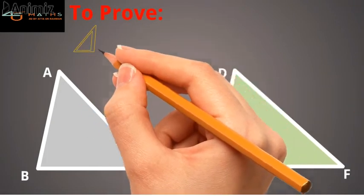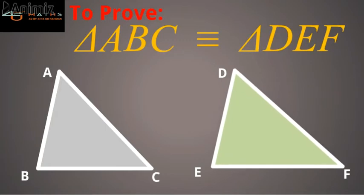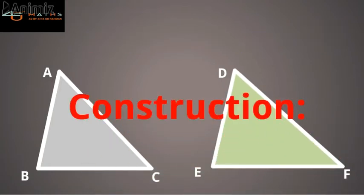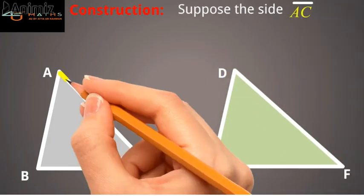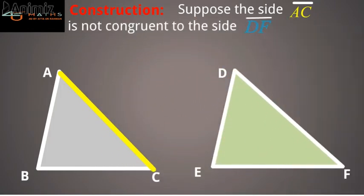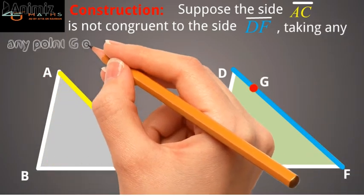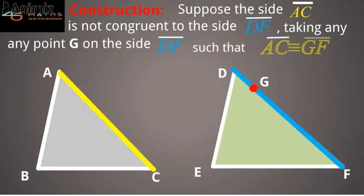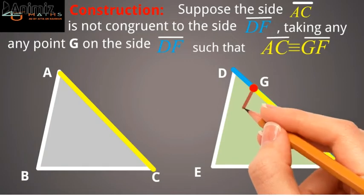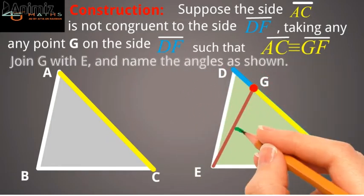Given of the theorem: we are given two triangles for comparison. We let triangle ABC and triangle DEF, in which angle B is congruent to angle E, side BC is congruent to side EF, and angle C is congruent to angle F. To prove: we need to prove that triangle ABC is congruent to triangle DEF. Construction: suppose side AC of triangle ABC is not congruent to side DF of triangle DEF. Since AC is not congruent to DF, take a point G on side DF such that AC is congruent to GF. Also, join G with E and name the angles as shown in the figure.